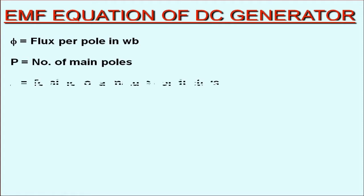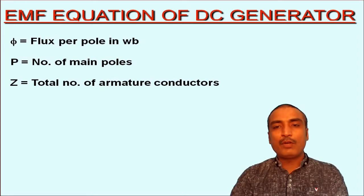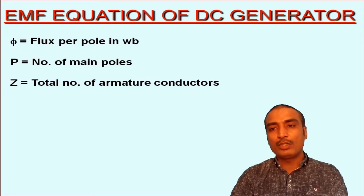Let us consider that φ is the flux per pole in weber, P is the number of main poles in DC machine, and Z is the total number of conductors in the armature of DC machines. Since a definite number of conductors are put in each armature slot,